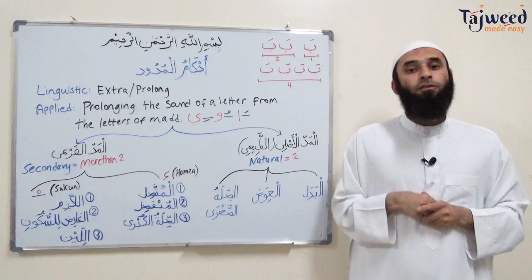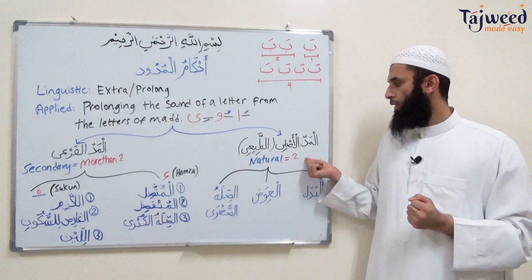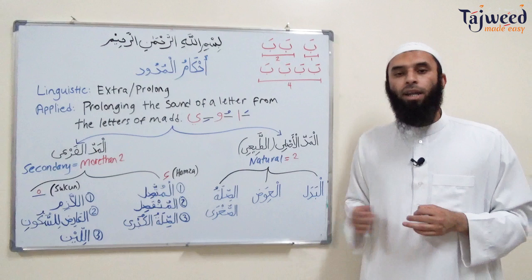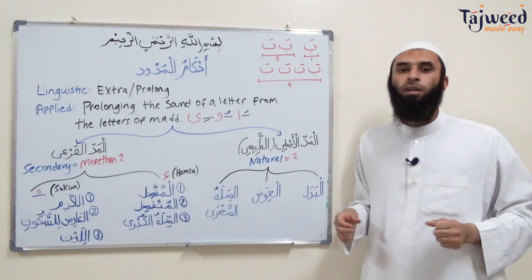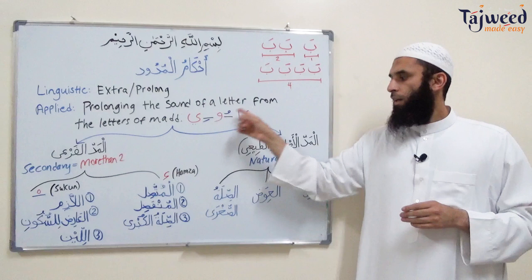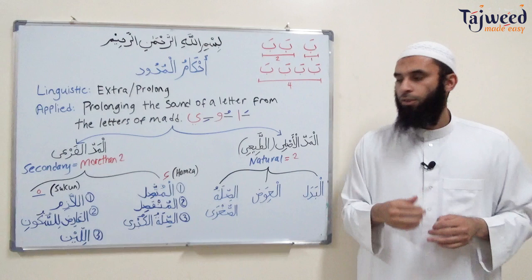Now, mad is of two types. Number one, mad al-asli or tabi'i. Number two, mad al-far'i. Mad al-asli means the natural mad, which has two counts. Mad al-tabi'i is itself a type, and underneath it there are three other mads which also have two counts: mad al-badal, mad al-iwad, and mad al-silat al-sughra. Mad al-far'i means the secondary mad, which is more than two counts — it can be four, five, or six.